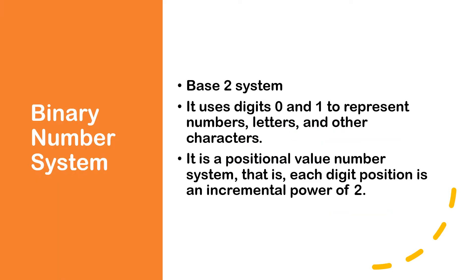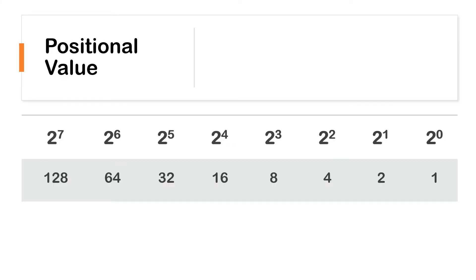Now the binary number system is a base 2 system. It uses digits 0 and 1 to represent numbers, letters and other characters. It is also known as a positional value number system. What that means is each digit position is an incremental power of 2. Let's focus on the term positional value. As I mentioned just a few seconds ago, each bit position has a value. So we always start off with position 0, and because we're dealing with a binary number that is base 2, so it's 2 to the power of 0, that would be a 1.